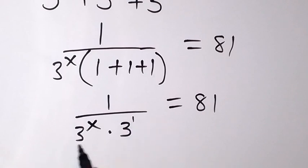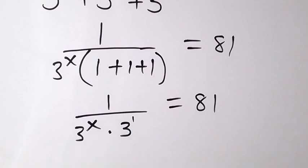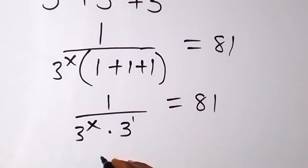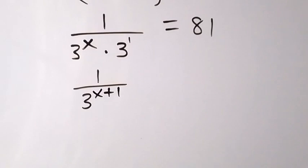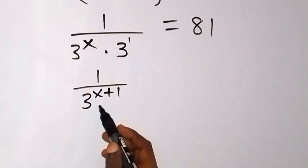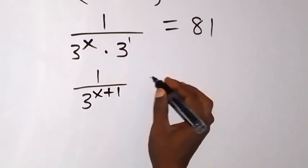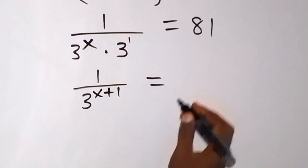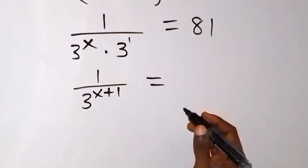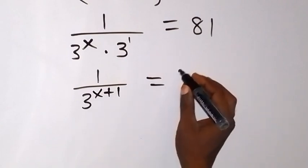And what we have here, we can equally write as 3 raised to power 1. So when we have the same base and they are multiplying, by law of indices, we can add the powers together. So we can write this as 1 over 3 raised to power x plus 1. Then 3 raised to power x plus 1 equals 81, which can be expressed as 3 raised to power 4.